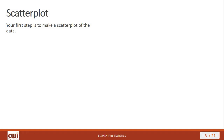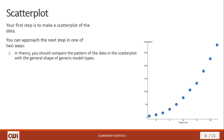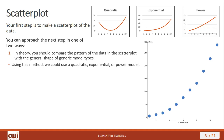The first step in making a model is to make a scatter plot of the data. Looking at our scatter plot, we can see it doesn't really look like a straight line — it looks non-linear. So which non-linear form are we going to use? There are two ways to approach this. The first is to compare the pattern of the data in the scatter plot with the general shape of generic model types. Looking at the options, I could be looking at one half of the quadratic form, or I could be using an exponential model because it has that curve shape, or the power model as well. Any one of these three models looks to be my best choice.